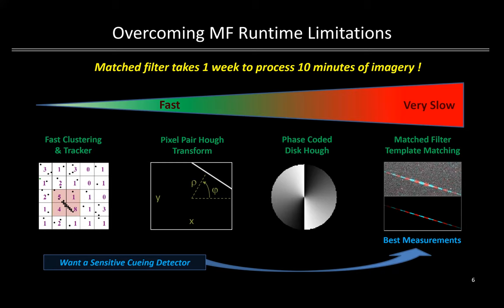Several choices for the front end detector are shown, from a slow phase-coded disk Hough transform, to a faster pixel-pairing Hough transform as was used in Meteor Scan, and a 40x faster cluster and alpha-beta tracking technique currently employed in the CAMS meteor detection pipeline. The latter was selected for use in the EMCCD pipeline to meet the latent but real-time processing requirement, which cues the match filter that focuses on false alarm mitigation and precise pick point measurements.